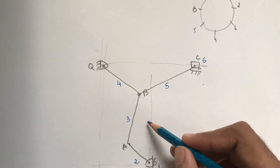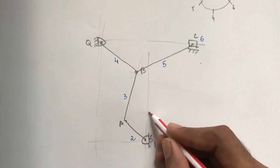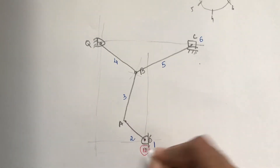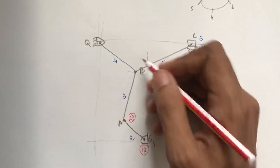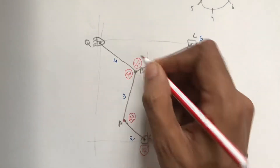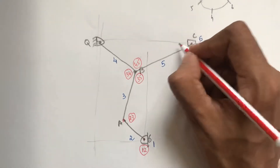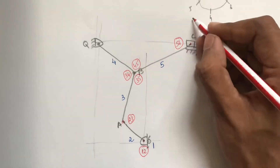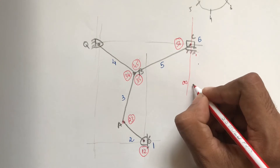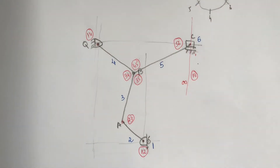Write down available instantaneous centers: link 2 and link 1 are connected giving IC 1-2; links 3 and 2 give IC 2-3; links 3-4, 4-5, and 3-5 are available. Links 5 and 6 are connected; link 6 is the slider that slides with respect to fixed path (link 1), so IC 1-6 is at infinity. Link 4 and fixed link 1 give IC 1-4.